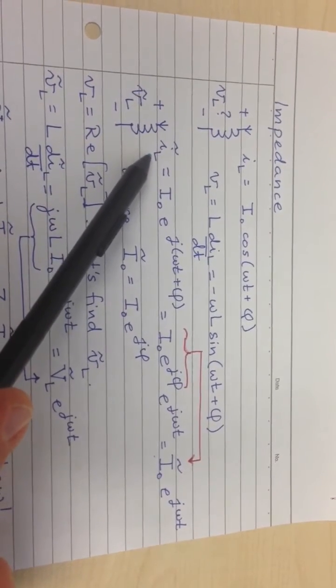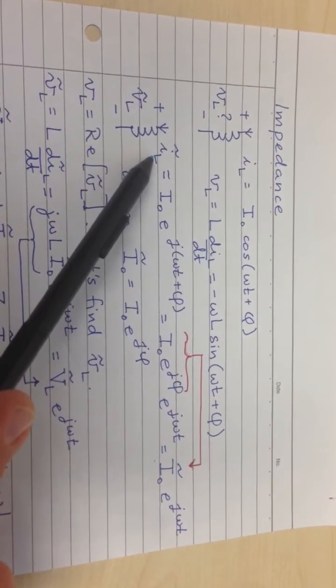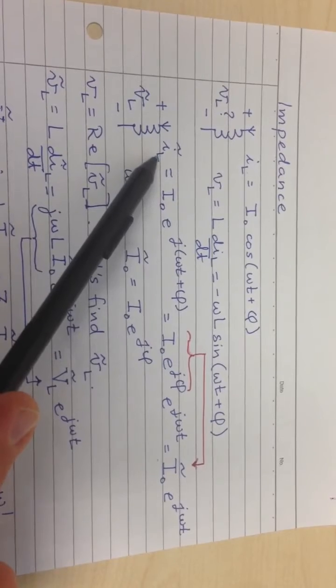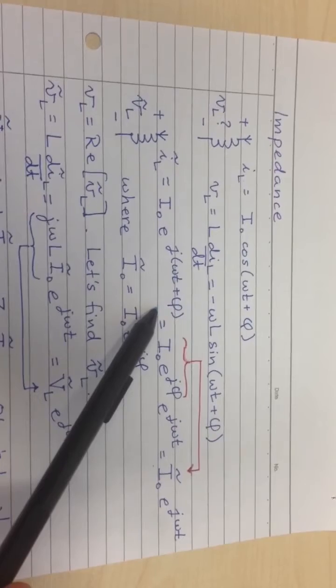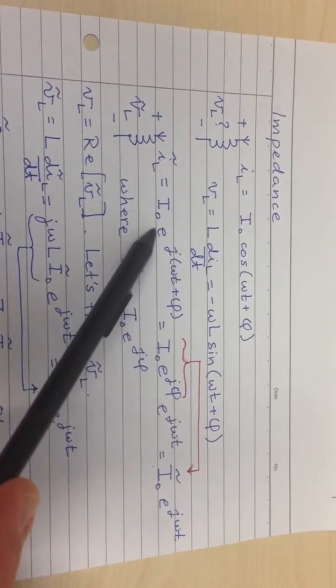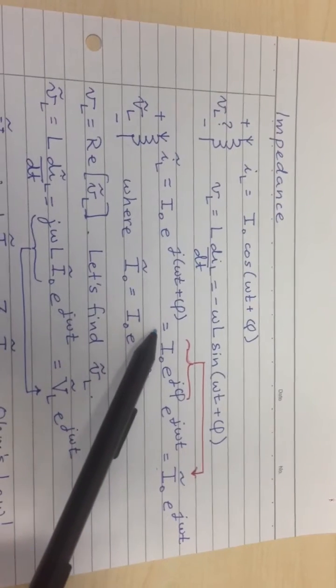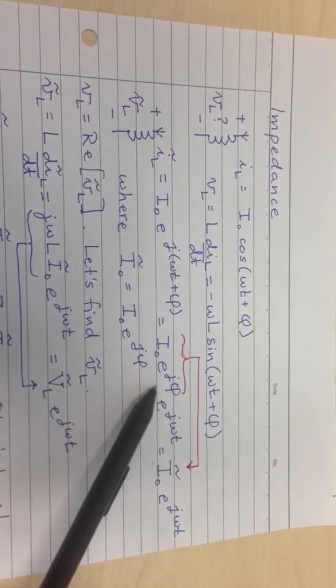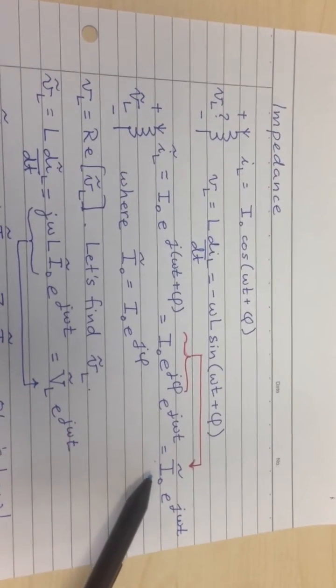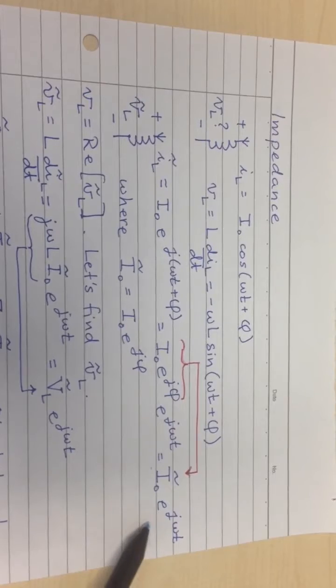If you write the current, instead of just writing IL, you write a complex number which we'll call IL tilde, and you write it as I0 e to the j omega t plus phi. So we wrote this so that the real part of this would be just the cosine omega t plus phi that we have up here. Then you can do some rearrangements, and you end up with something like I0 tilde, which is now a complex number, e to the j phi times e to the j omega t.